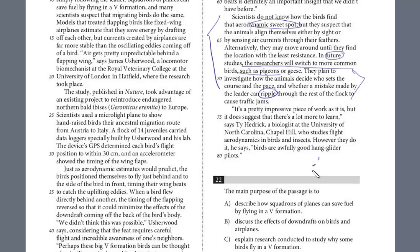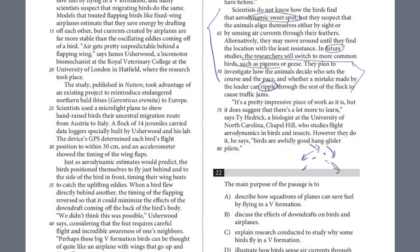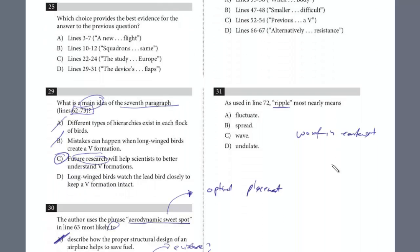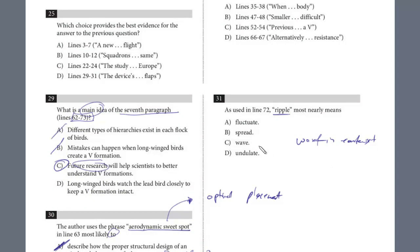We've got this V formation, and they're saying that a mistake by the leader is going to ripple down. It's going to have sort of this rippling effect, and you can almost predict it. Let's take a look at the choices. Fluctuate means to go back and forth. Spread - that's where it spreads, right? Because it starts with a leader and it spreads all the way down the formation. That's the answer.